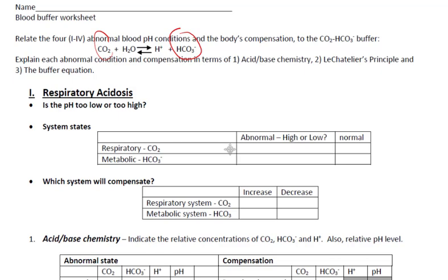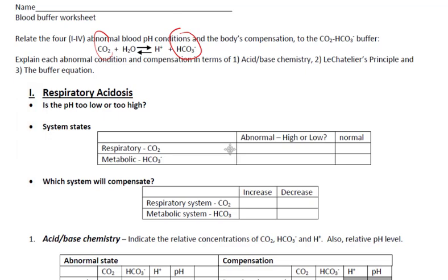The first part of each page is a summary — these bullet points summarize the condition. Respiratory acidosis implies an acidic condition, so the pH is too low. Simply circle 'too low.' The respiratory system is causing the acidic condition, and the respiratory system controls the CO2.